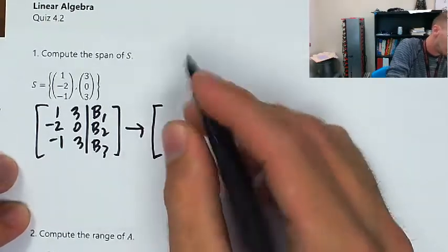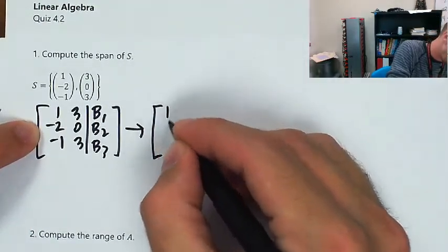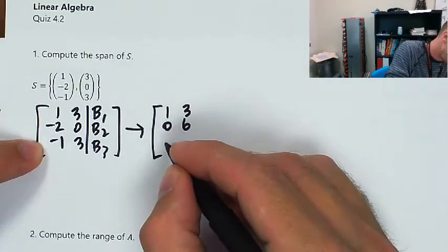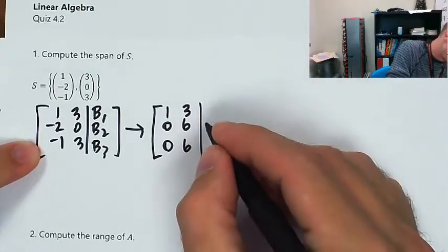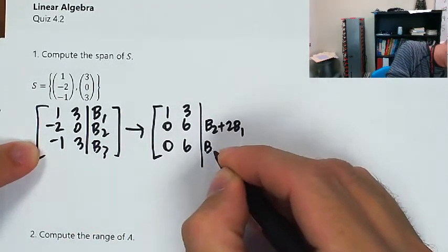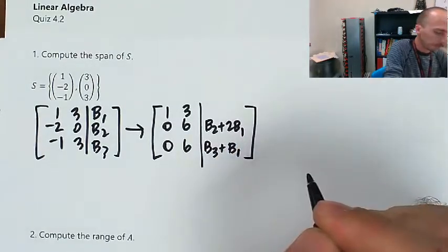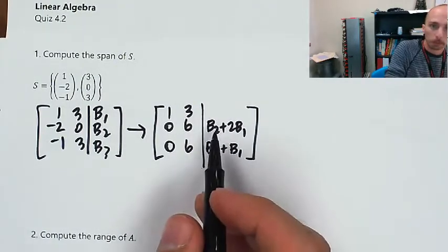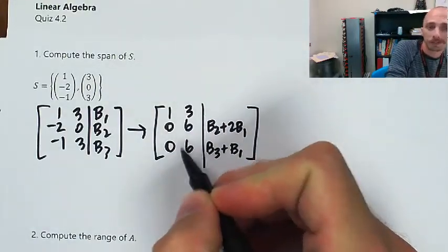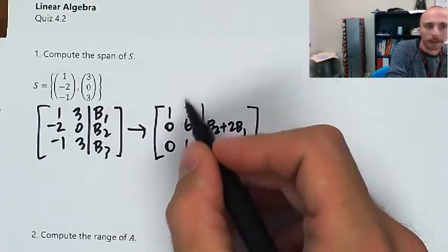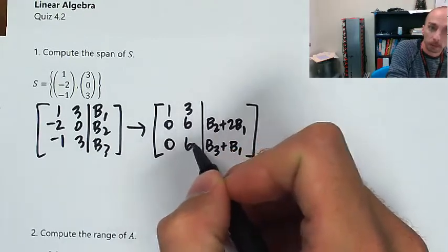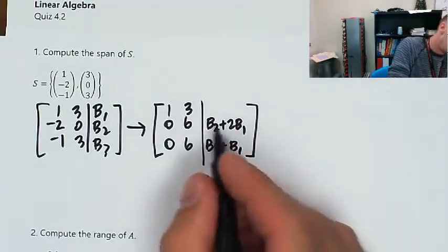I'm going to add two copies of row 1 to row 2 — so 1, 0, that'll be 6 — and add one copy of row 1 to row 3, so that'll also be 0 and 6. That's convenient. So that'll be b2 plus 2b1, and this will be b3 plus b1. I know right now that these two things need to be equal in order for this to be consistent. I'll divide by 6, subtract up, end up with 1, 0, 0, 1, and 0, 0 — basically this minus that. So these two things need to equal each other.